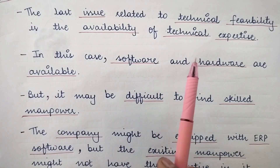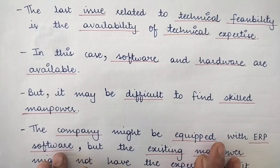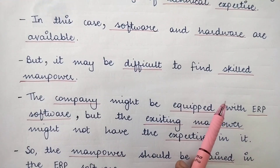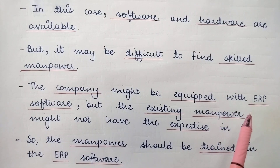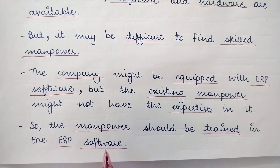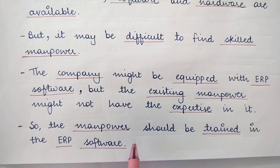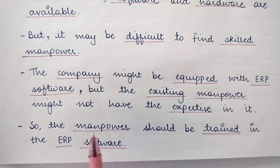The question in the third step is whether you have skilled manpower — people skilled enough to use the technology. For example, the company might be equipped with ERP software and supporting hardware, but the existing manpower might not have the expertise to use it. The users who will be using it on a daily basis are not trained. So the manpower should be trained in the ERP software. After ensuring the scope and availability of hardware and software, you must ensure that manpower is trained in using that particular technology.